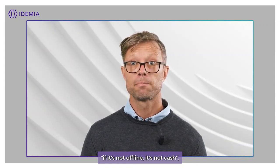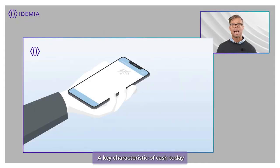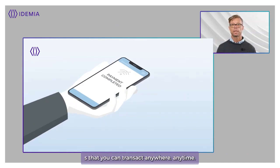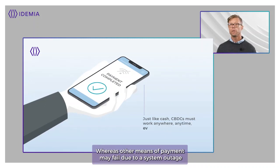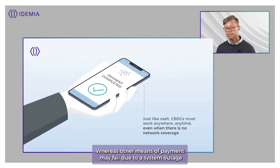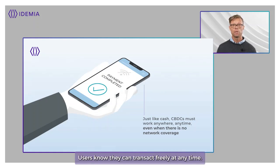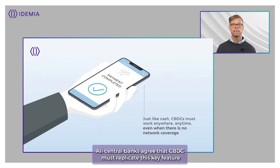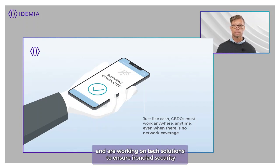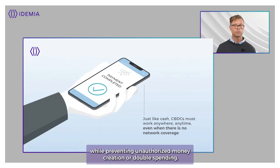The payment guru Dave Birch often says: if it's not offline, it's not cash. And this is an important statement. A key characteristic of cash today is that you can transact anywhere, anytime. Whereas other means of payment may fail due to a system outage, a lack of network coverage, or worse, a natural disaster, cash cannot fail. Users know they can transact freely at any time. All central banks agree that CBDC must replicate this key feature and are working on tech solutions to ensure ironclad security for offline transactions while preventing unauthorized money creation or double spending.